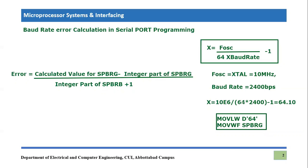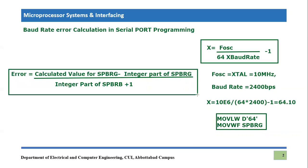This will lead towards an error in baud rate, so we won't achieve the exact baud rate — there will be a certain error. If we want to calculate that error, or if we are interested to know what percentage of error is there, we can use this formula. This is our actual topic of today's lecture. The error is equal to the calculated value of SPBRG. In this case, the calculated value is 64.1, but we used 64. The actual calculated value is 64.1, but we used only 64, which is the integer part.